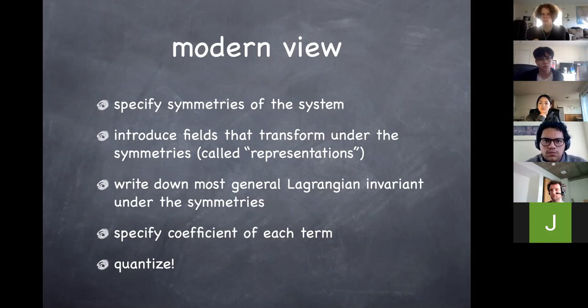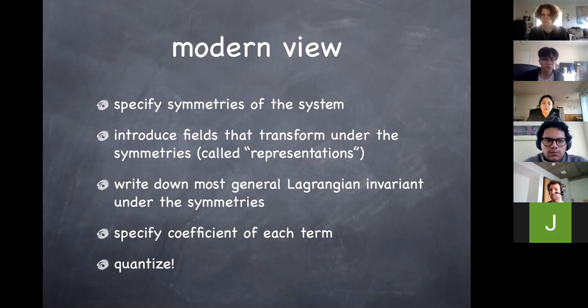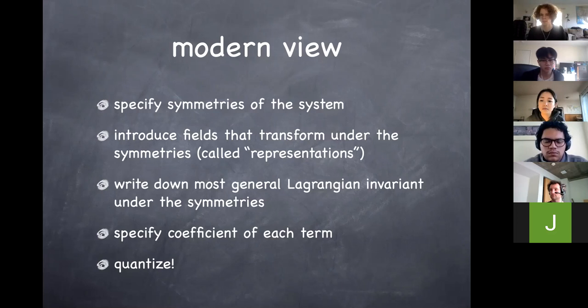What you then do is write down the most general Lagrangian that is invariant under the symmetry of the system. Once you have this most general Lagrangian, you count up the terms, and what's left is to specify the coefficient of each term. Then you quantize the Lagrangian: define the canonical commutation relation, derive the Hamiltonian, identify the Hilbert space, write the Schrödinger equation. That way you recover everything from quantum mechanics. The symmetry is the key. For relativistic systems the symmetry is Lorentz symmetry; for non-relativistic systems it's Galilean symmetry.